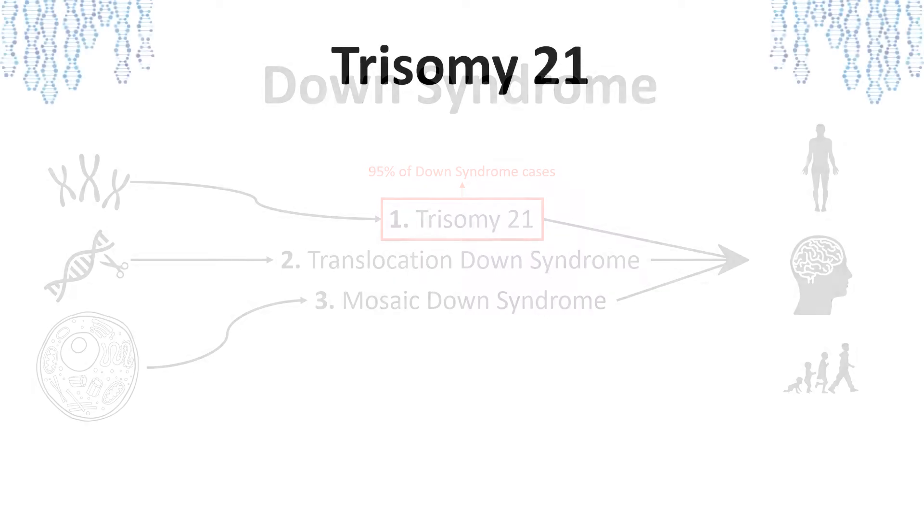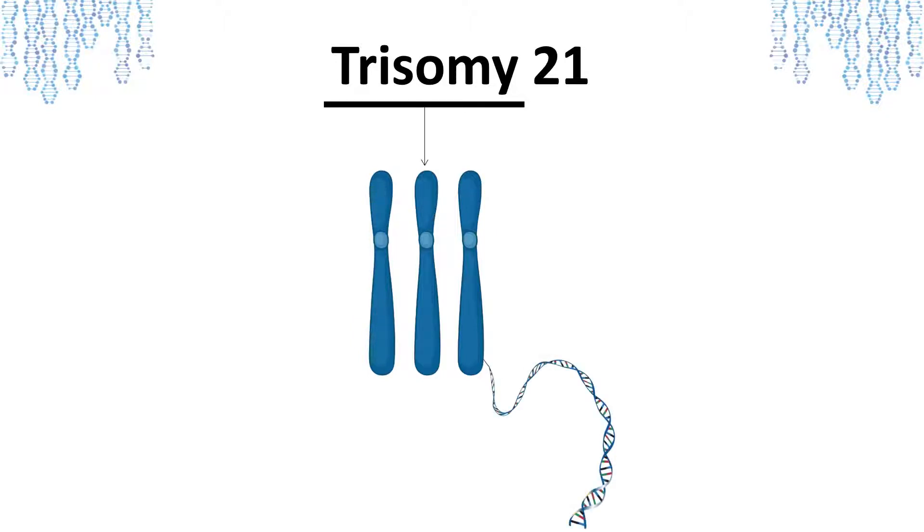A lot about how Trisomy 21 occurs can be derived from its name. Trisomy is known as the existence of three chromosomes. Chromosomes are essentially a tightly packaged form of our DNA, the very blueprint for what makes us who we are.